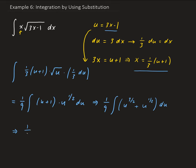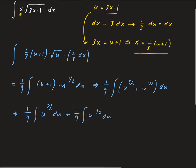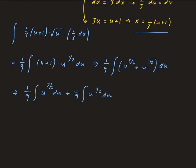So we have one ninth times the integral of u to the three halves plus u to the one half du. We can distribute the integral inside using the fact that the integral is a linear operator, splitting it over the addition.